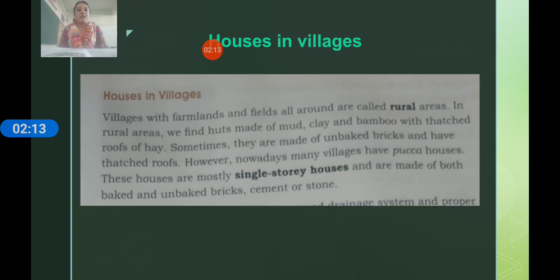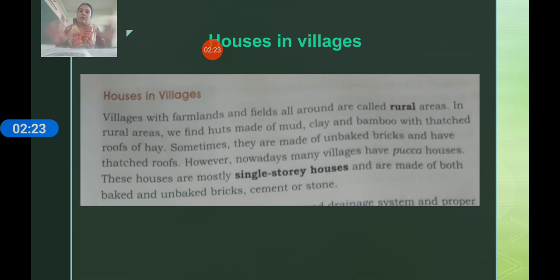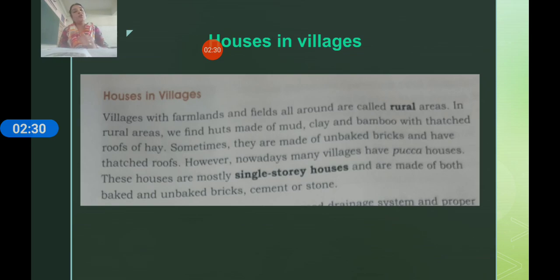These village houses are mostly single-story houses. A single-story house has only one floor — there is a roof or terrace on top, and there is no second floor above. You can see that houses built in villages are made of cement and bricks, either unbaked or baked.